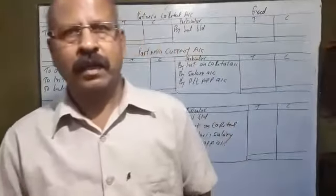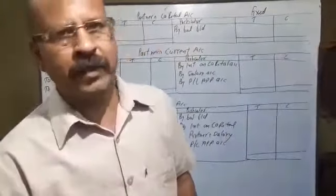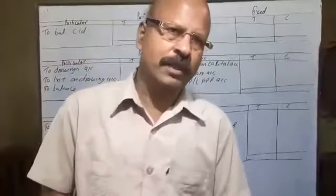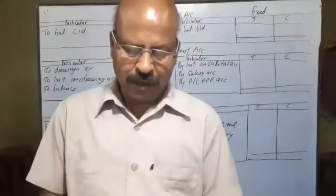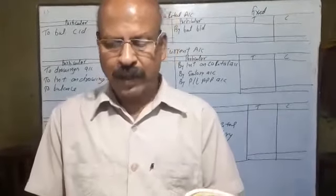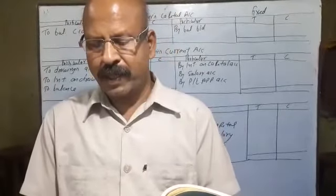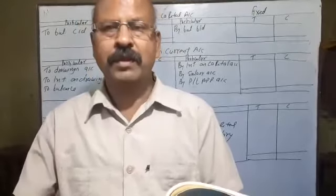Hello students, now we are going to talk about the second question. The question is that Trakti and Chohan are partners in a firm sharing profit and loss in the ratio of 3:2.